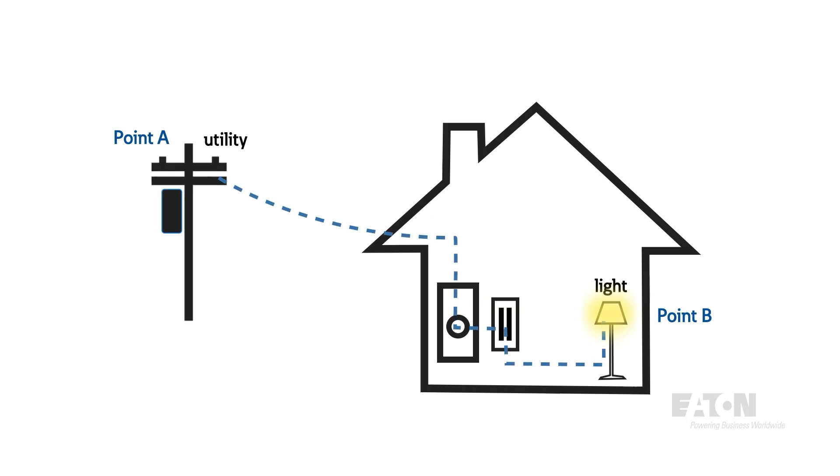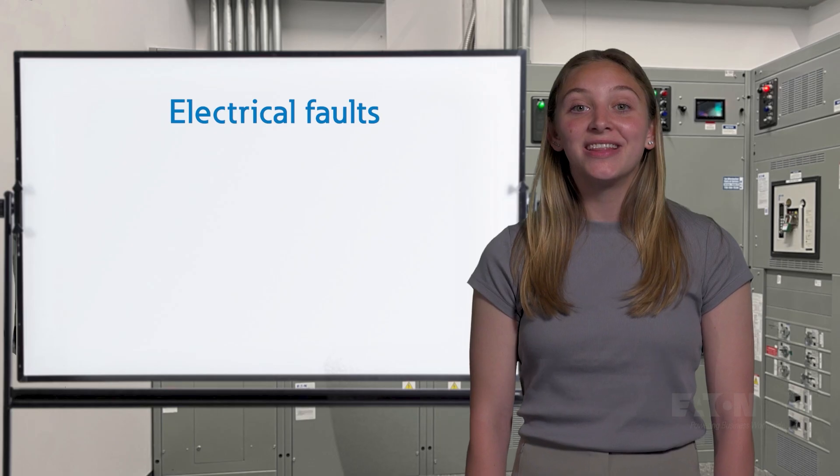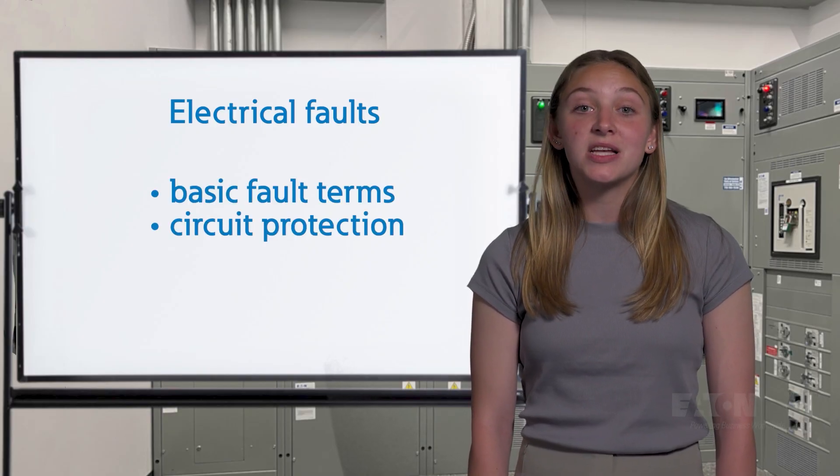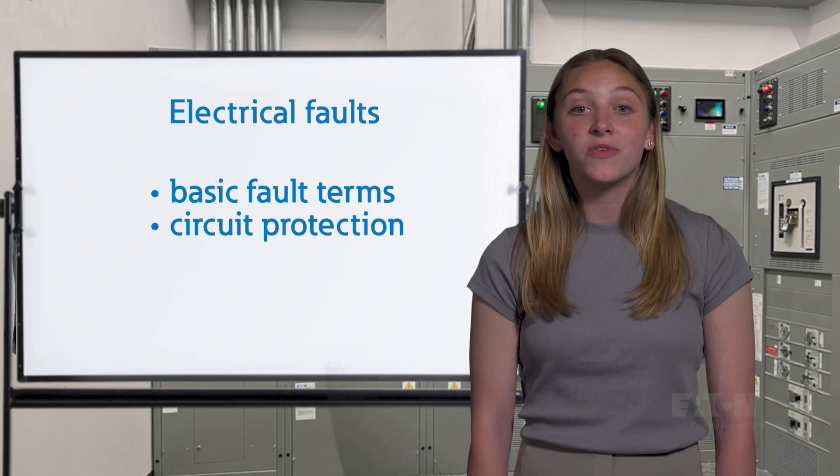If this rule is broken, that is, something happens to the electrical infrastructure and current isn't flowing where it should be or is flowing where it shouldn't, we call that a fault. In this video, we'll go over basic fault terms as well as the ways we can protect our power systems from unintended faults.